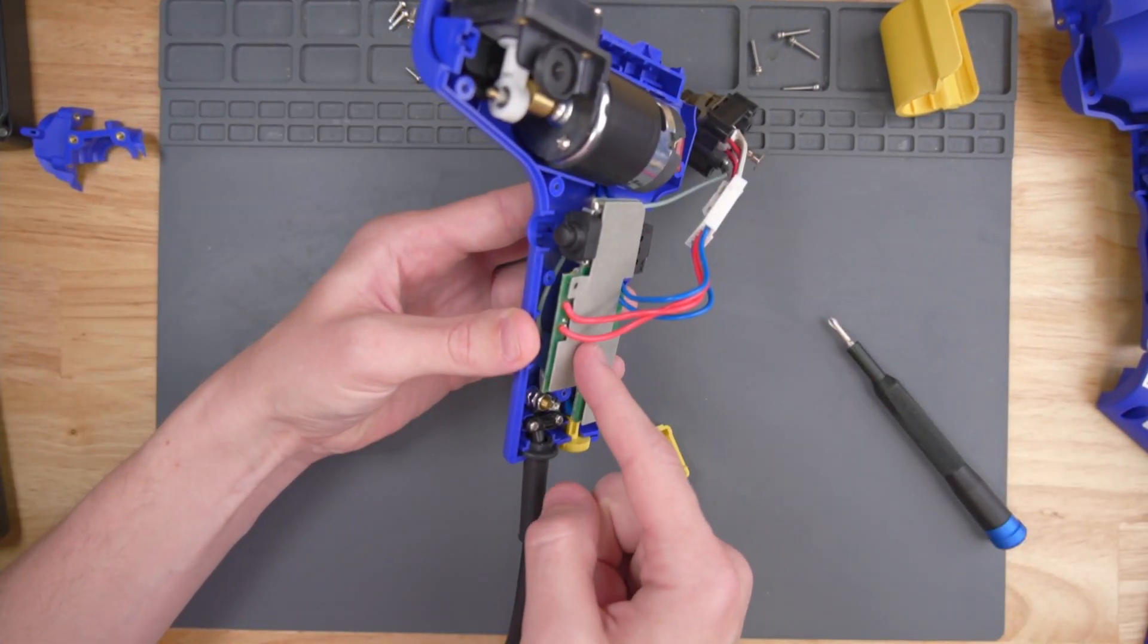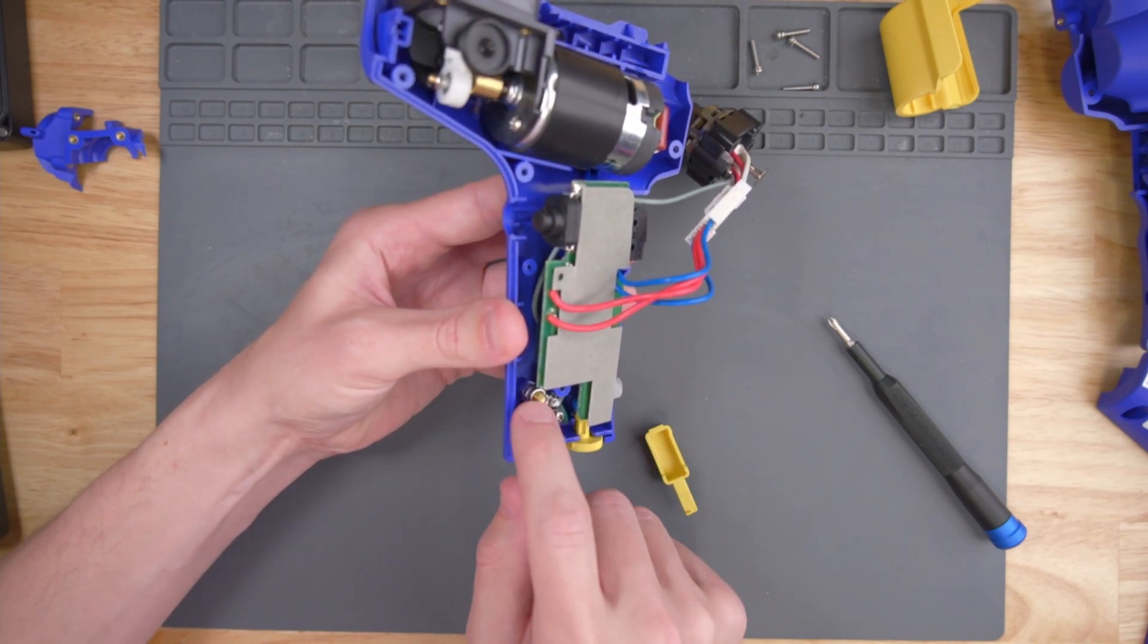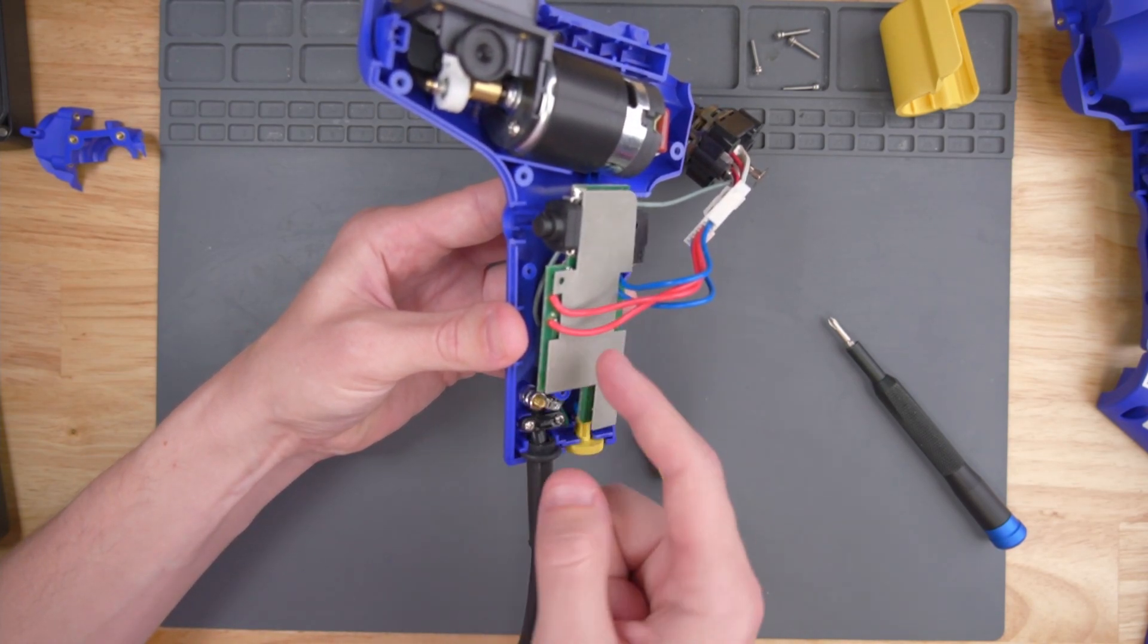I can't take this PCB out yet because it looks like it's held in by what might be a grounding screw here. So we're going to have to unbolt these bolts in order to take this PCB out.